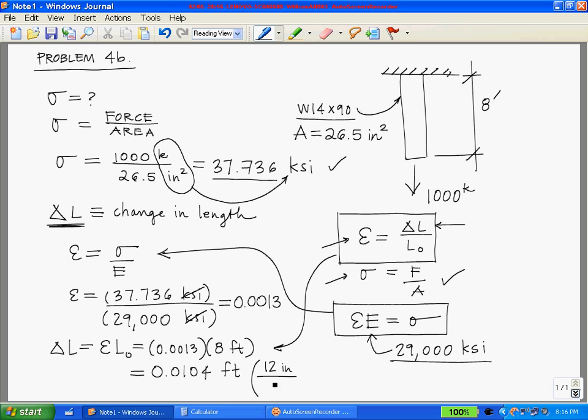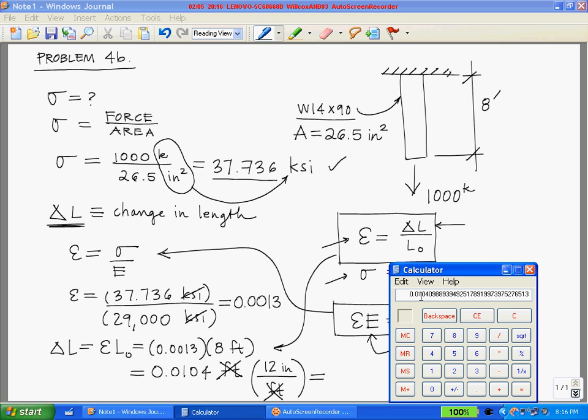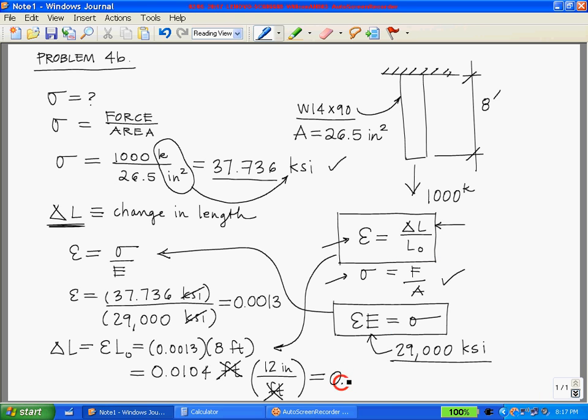The only thing we have left to do is convert this into inches, so we're going to multiply it by 12 inches per foot. Your feet will cancel out. Back to the calculator: 0.0104 feet times 12 inches equals 0.125 inches.